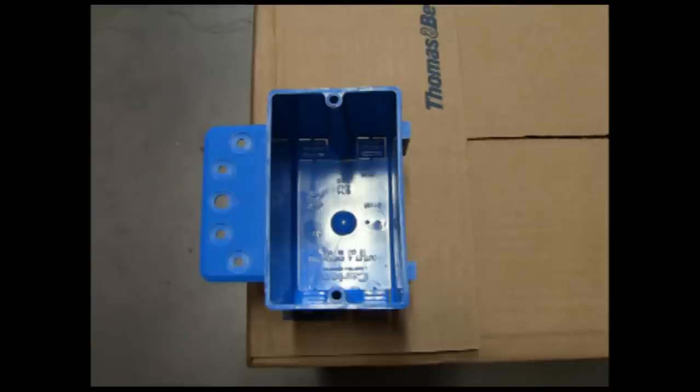We see here a stud-mounted box. This box type is used when your framing beams are so close together that it's impossible to nail a box in between them. Excellent for tight places and spaces.